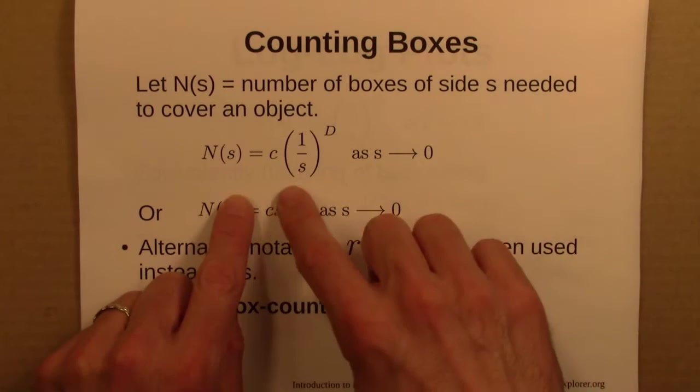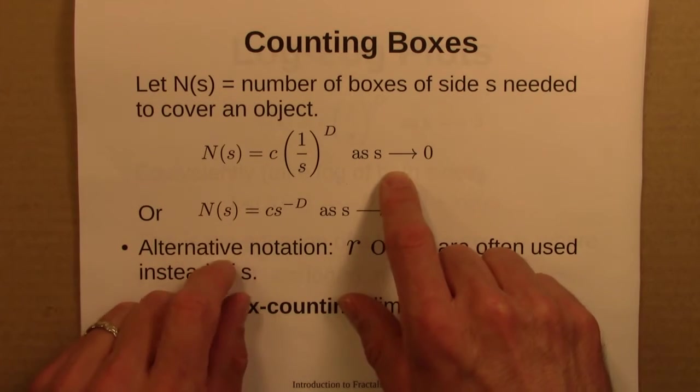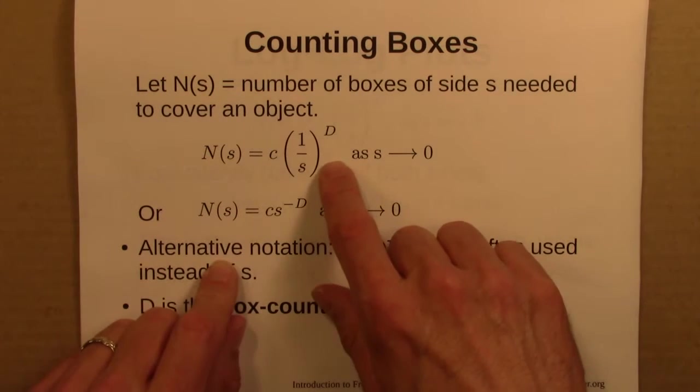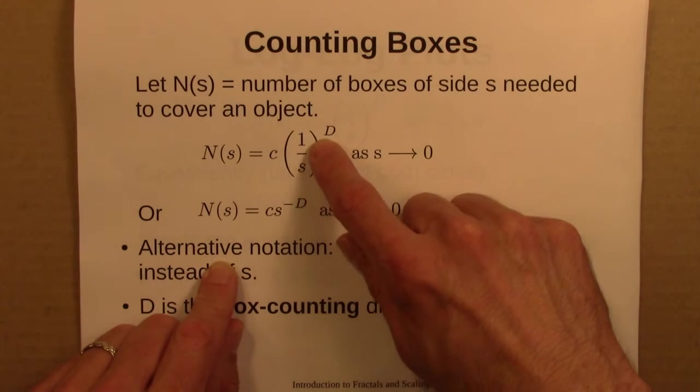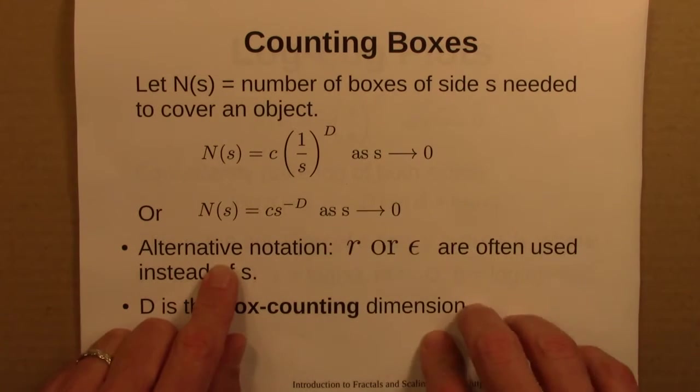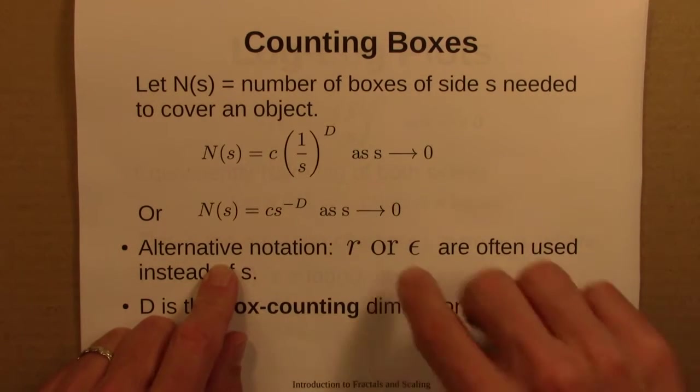And then we saw, by thinking about circles and the like, that this really only holds as s gets really small. Equivalently, one could write this as s to the minus d, using the fact that 1 over s is s to the minus 1. So one will often see it written this way in other books, but both of these are common.